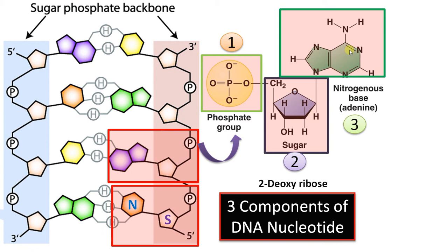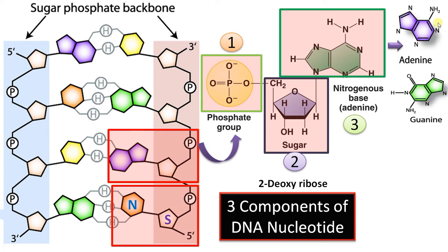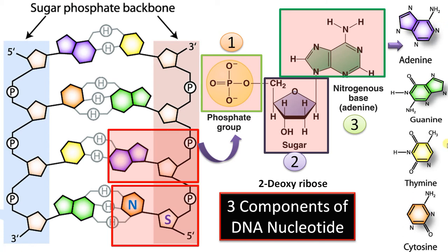There are four nitrogenous bases. Double-ringed adenine and guanine form the purines, and single-ringed thymine and cytosine form the pyrimidines. The sugar forms a glycosidic bond with adenine and guanine at double-ringed structures from C1 to N9, whereas in the case of thymine and cytosine the glycosidic bond is between C1 and N1.